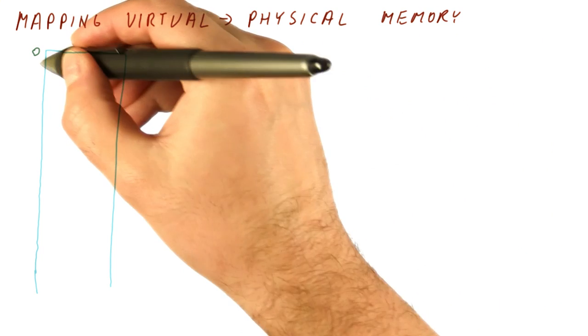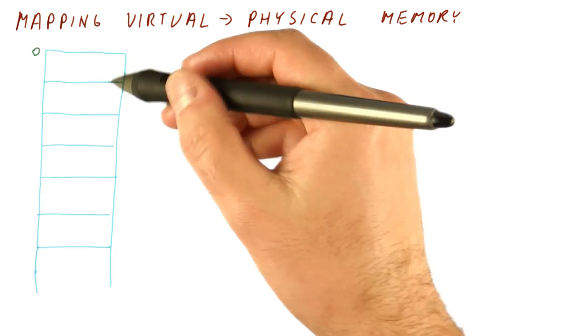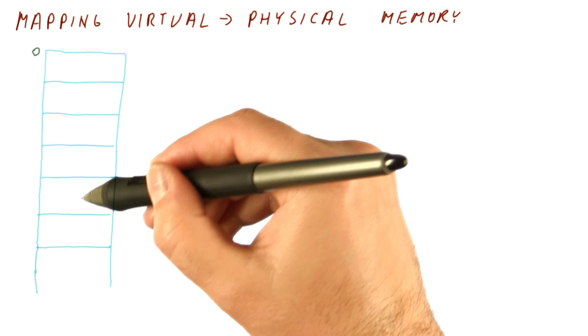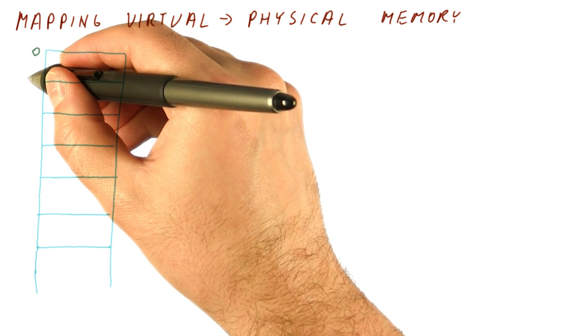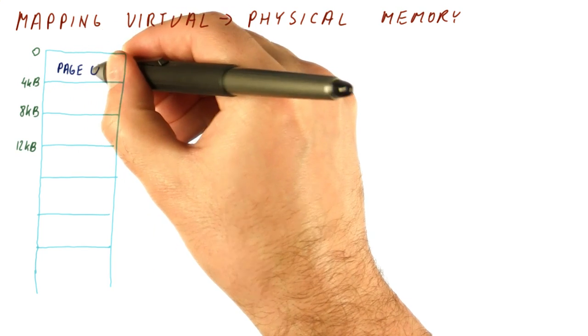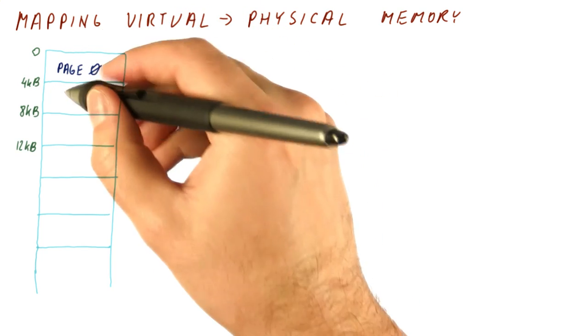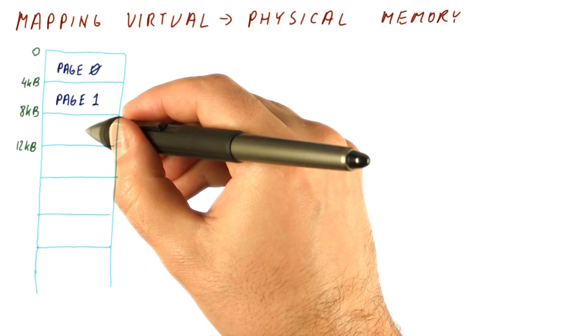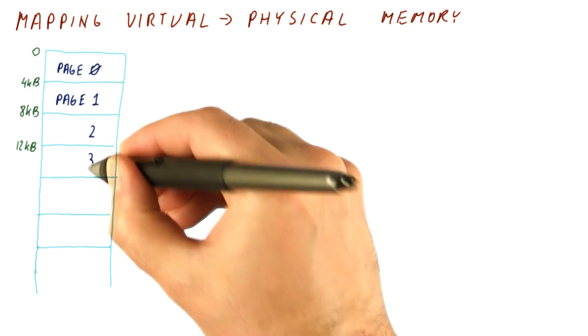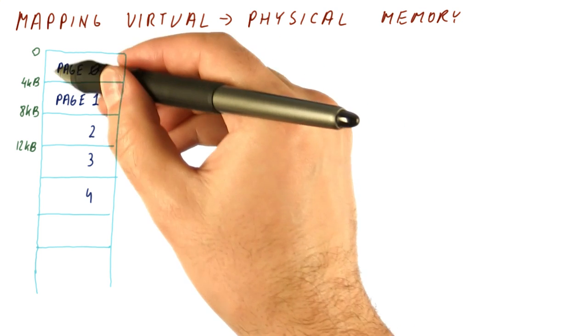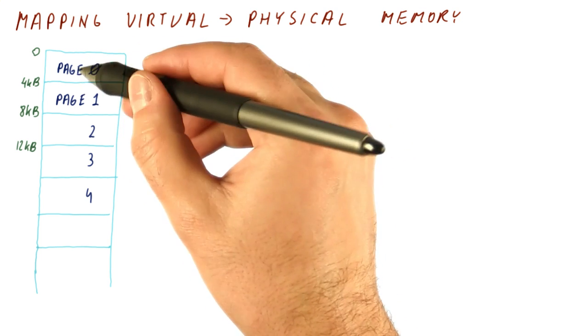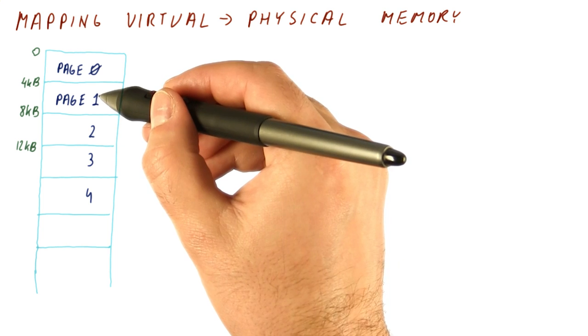So instead, the program's memory is divided into equal size chunks called pages. A typical page size is four kilobytes. So this would be page zero in this program, page one in this program, page two, three, four, et cetera. So pretty much the first four kilobytes will be page zero, the next four kilobytes will be page one, and so on.